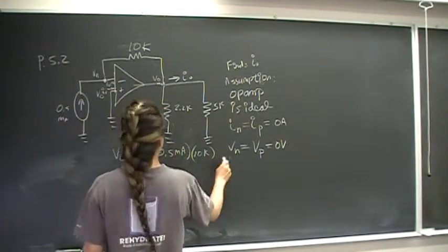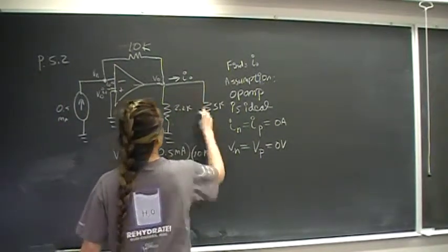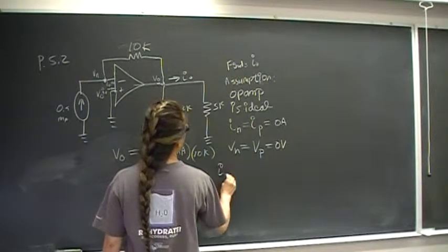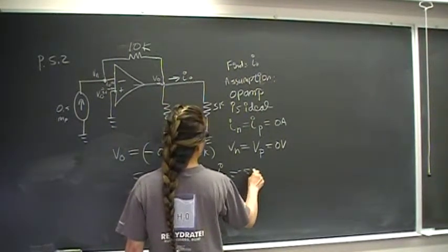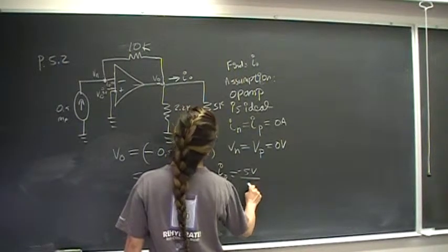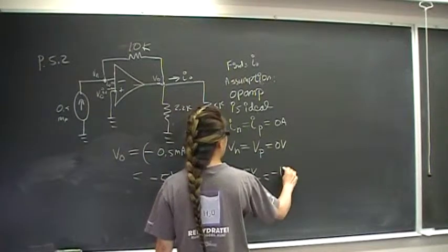And so we have negative 5 volts, we want to know I out, so that's just going to be the current through here. So I out, it's going to be negative 5 volts, divided by 5K, and I can do that one in my head, that's negative 1 milliamps.